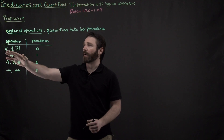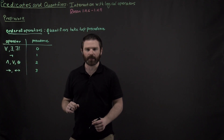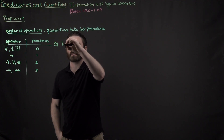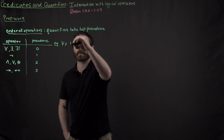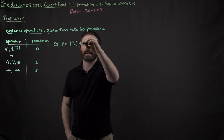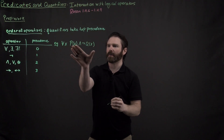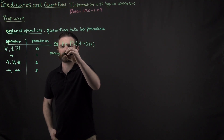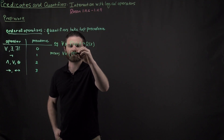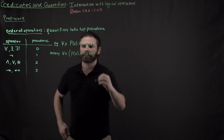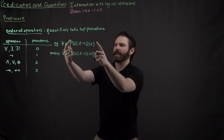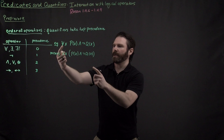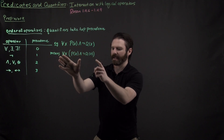Our quantifiers take top precedence right here. For example, if I were to say 'for every x, P of x and not Q of x' — this means that the parentheses are around the entire expression right here. So this universal quantifier takes top precedence, and that's what it means.